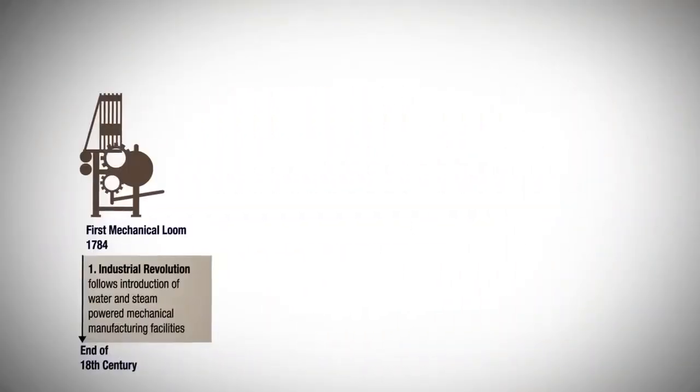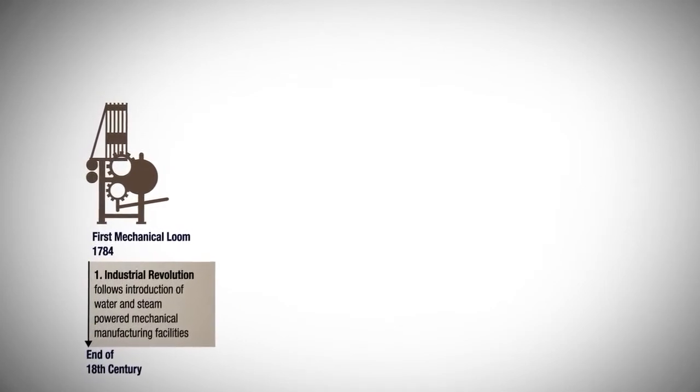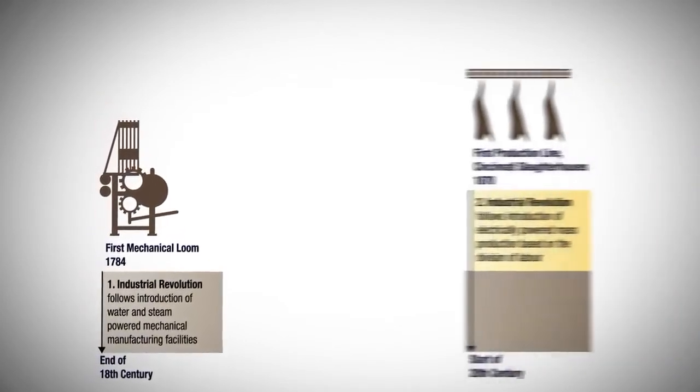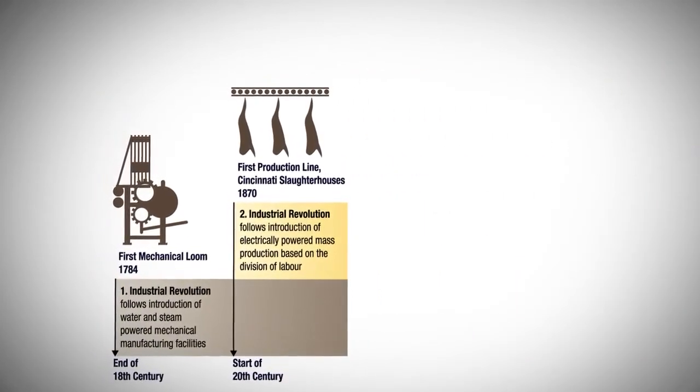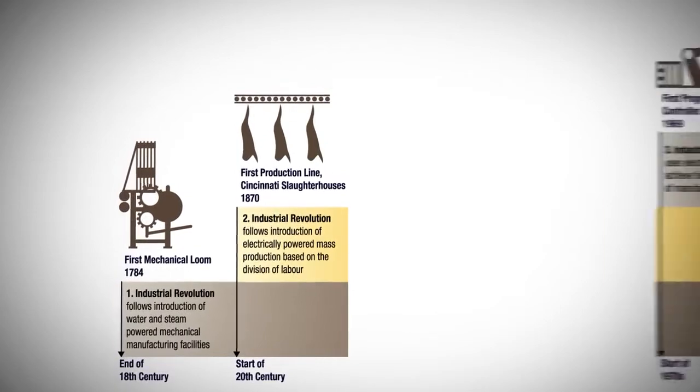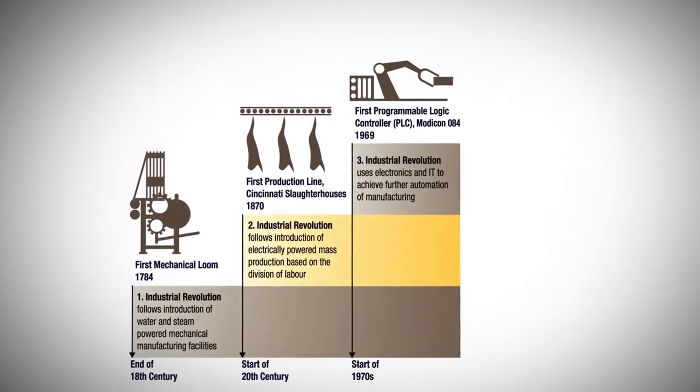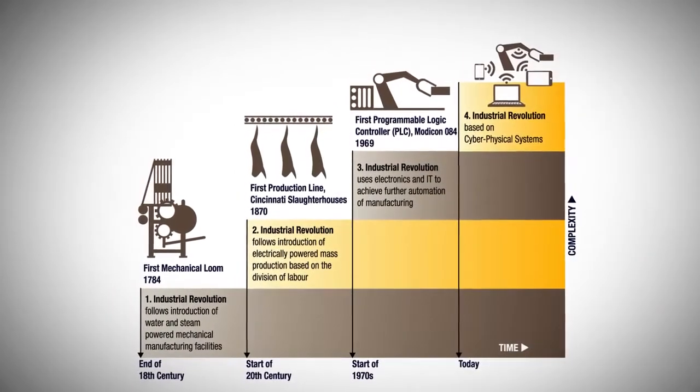Industry 4.0, Factory 4.0 — what they're really talking about is the fourth industrial revolution. It started in the 18th century with the first industrial revolution. The start of the 20th century was the second, the start of the 70s was the third, and this one is the fourth. The next one you'll hear about is Industry 5.0 or Factory 5.0. So now we're going to go into why PLCs.